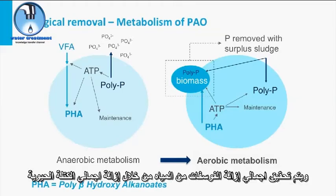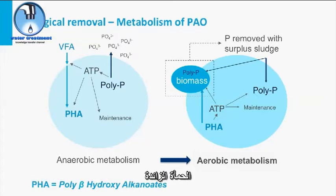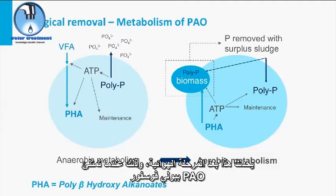Net removal of phosphate from the water is achieved through the removal of the net biomass growth — the waste-activated sludge. This happens after the aerobic phase, when the PAO are filled with polyP.